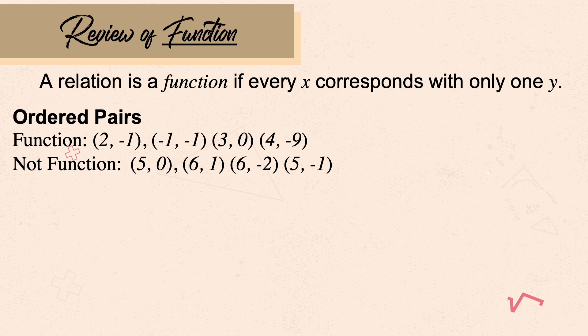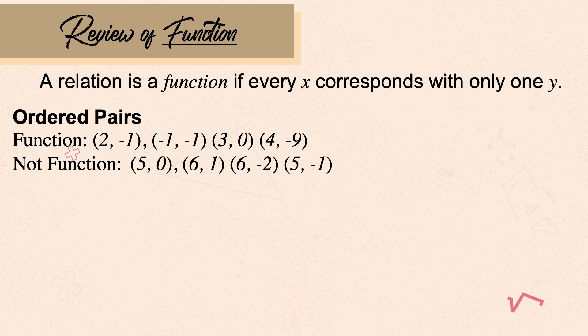The domain is the first number in the ordered pair. In the first example, the domains are 2, -1, 3, and 4 — no domain is repeated, so this is a function. In the second example, we have (5,0), (6,1), (6,-2), (5,-1) — five and six are both repeated, so this is not a function; it's just a relation.